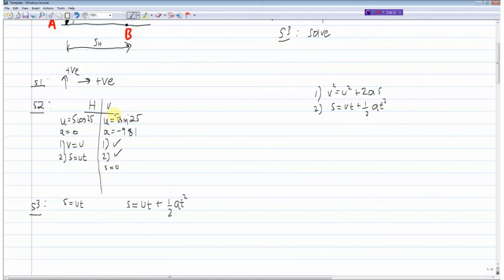So using the vertical variables, we can say we know s equals zero. So we put a zero here. We know the initial vertical velocity is equal to five sine 25 multiplied by t. And then it's minus a half times by 9.81. It's minus since a equals minus 9.81, and we multiply that by t squared.